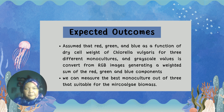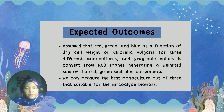Expected Outcome: In this project, we assume that red, green, and blue values are a function of the dry weight of Chlorella vulgaris in three different monocultures. Grayscale values are converted from RGB images generated from a weighted sum of red, green, and blue components. From this, we can measure the best monoculture out of the three that is most suitable for microalgae biomass assessment.